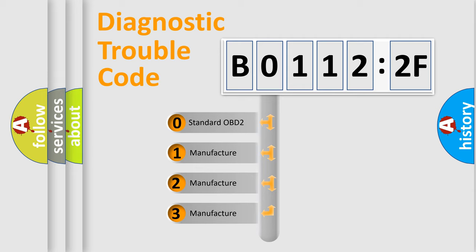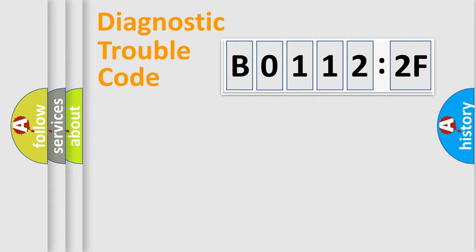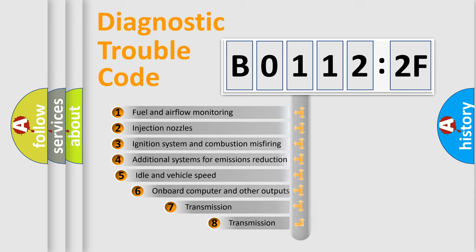If the second character is expressed as zero, it is a standardized error. In the case of numbers 1, 2, 3, it is a manufacturer-specific expression of the car-specific error.